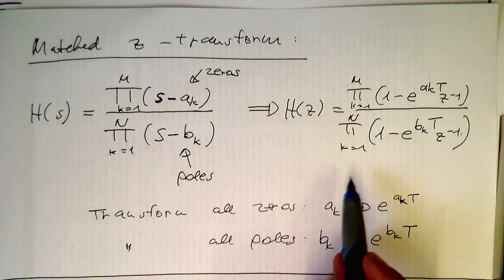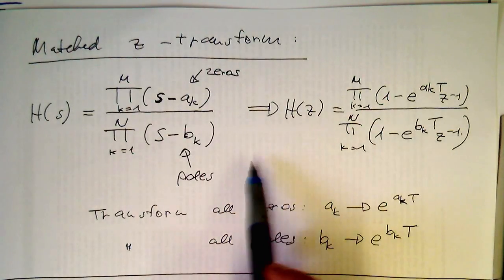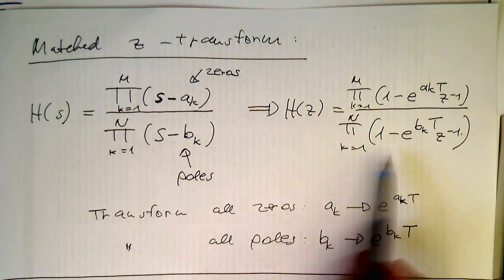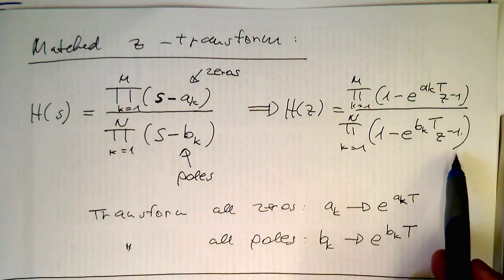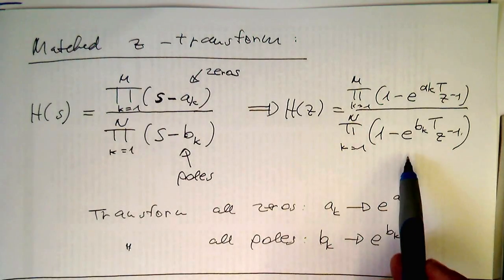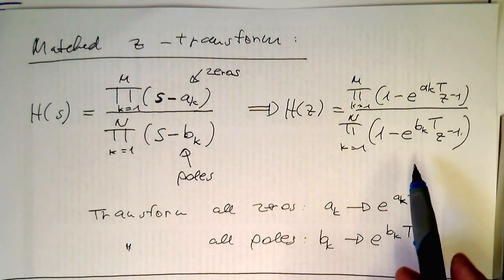But the actual benefit of this is that these pairs are actually preserved. So this product stays a product here, and then we can match up complex conjugate pairs with each other on the other side again.